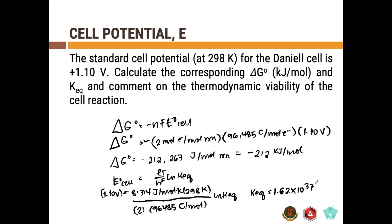Now what do these values tell us about the thermodynamic viability of this reaction? Well, looking at the delta G of the reaction which is negative 212 kilojoules per mole we say that the Daniell cell is spontaneous.